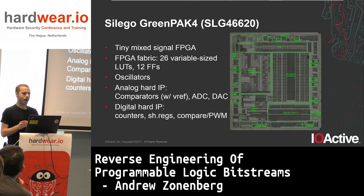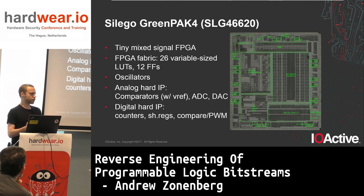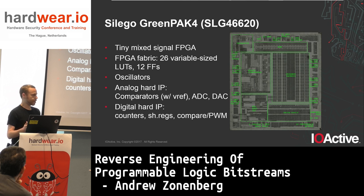They've also got interesting analog and hard IP like oscillators. My flow doesn't do analog modeling, so I convert analog blocks into primitive instantiations and work around them, focusing on digital stuff. The digital blocks — counter hard IP, shift register hard IP — are lifted into IR as generic counter and shift register cells, with tweaks like unifying active-low versus active-high resets into a common form factor.